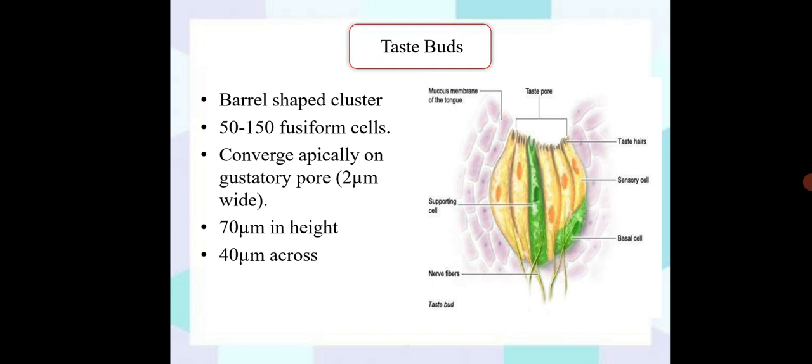They are just like barrel-shaped clusters. It will be most probably 50 to 150 fusiform cells which form the taste buds. It is converged apically on the gustatory pore with the size of 2 micrometers wide. They are 70 micrometers in height and 40 micrometers across. Here you can see the taste pore with the presence of taste hairs, and those taste hairs are attached with the sensory cells which generate the action potential. The same will be provided to those nerve fibers and further it will be processed for the identification of the taste at higher center of the brain. Other than those sensory cells, there are certain supporting cells and basal cells.